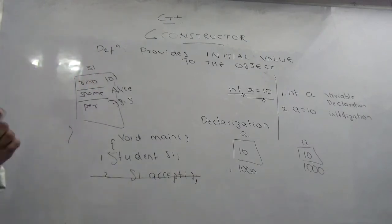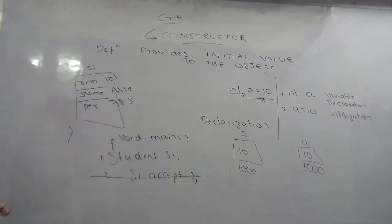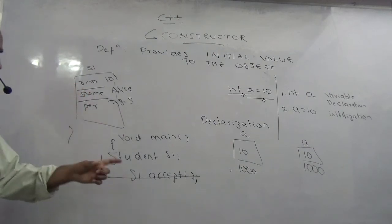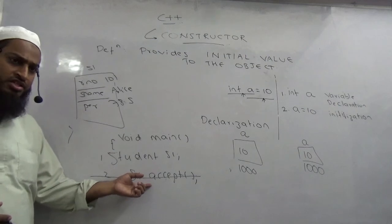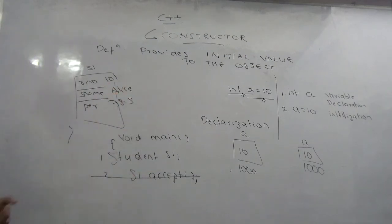So constructor and accept function are complementing each other. If you are having a constructor, you can initially avoid the accept function. If you are having the accept function, you can avoid the constructor. Am I understood? So let's do this.